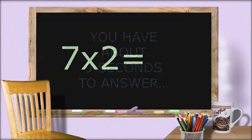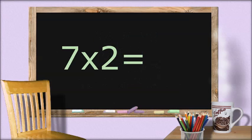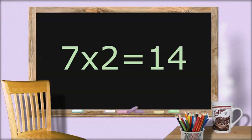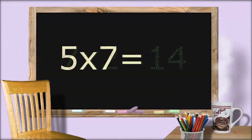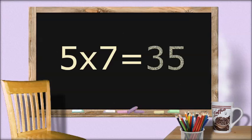7 times 2 equals... 14. 5 times 7 equals... 35.